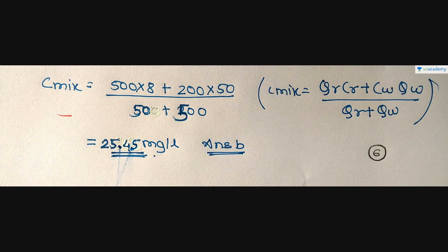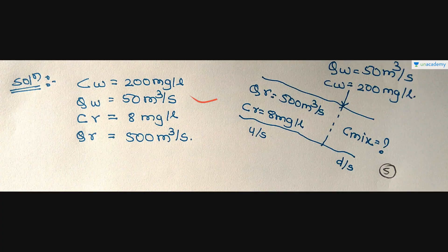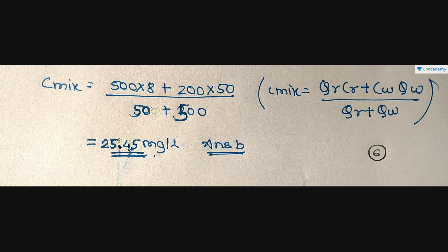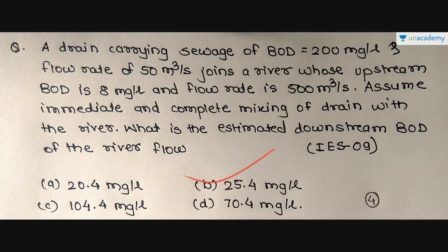We use the C-mix formula: C_mix = (QR × CR + QW × CW) / (QR + QW) = (500 × 8 + 200 × 50) / (500 + 50) = 25.45 mg/L. So the answer is Option B, 25.4 mg/L, which is the estimated downstream BOD of the river flow.